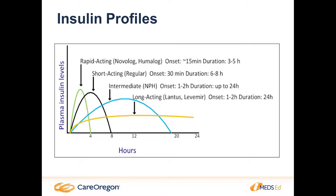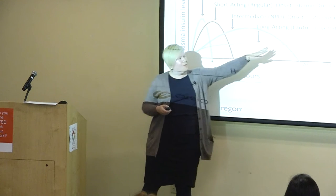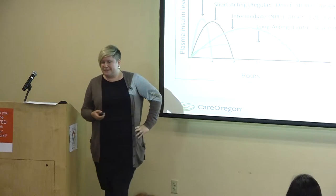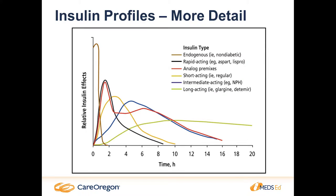The graph shows a kind of flat line for Lantus extending over 24 hours, and Levemir shows a little bit of a peak. This one also shows the endogenous response and then the rapid-acting and a few of the mixed insulins as well — so it's just giving an idea of what you're looking at when checking out different types of insulin.